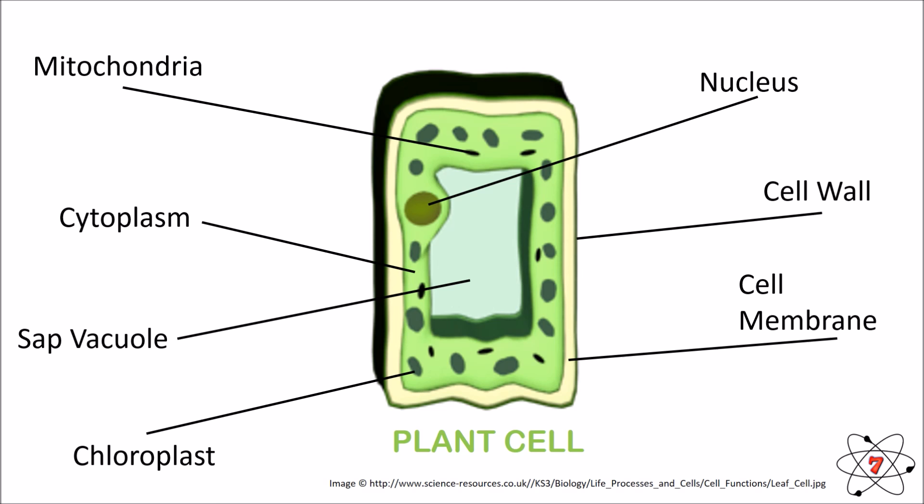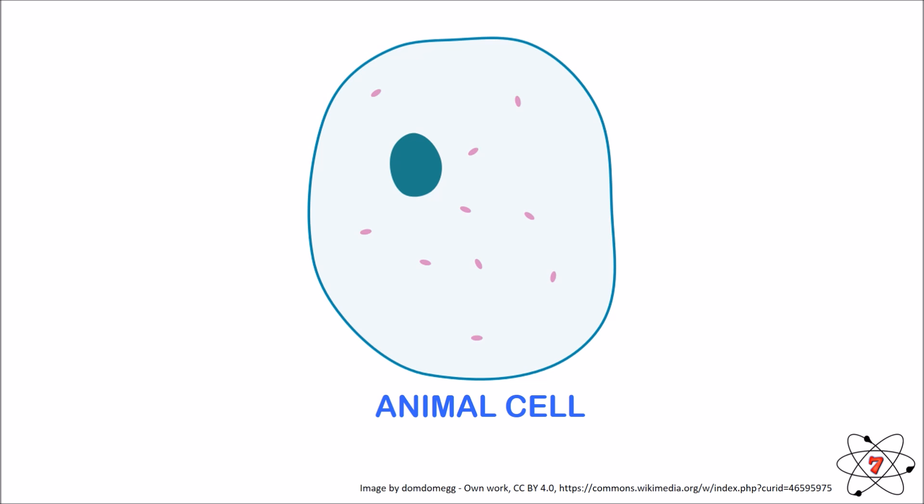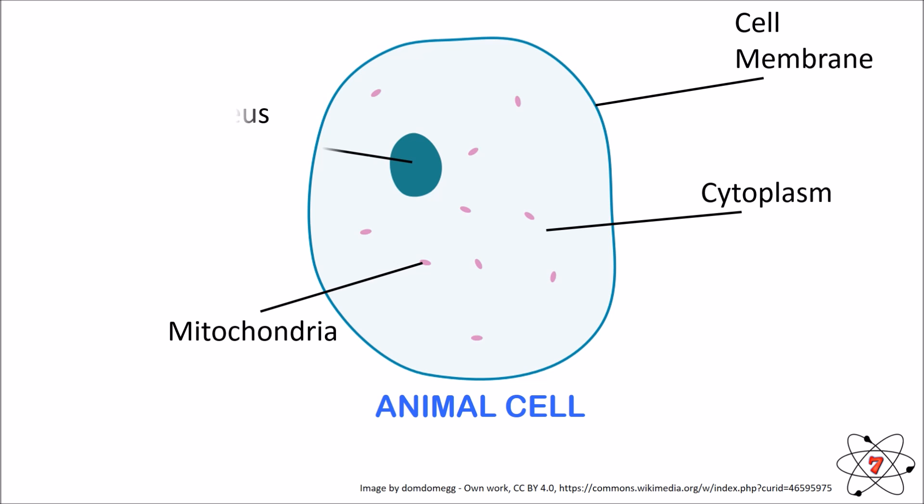And here we've got an animal cell. We need to know the different parts. We've got the cell membrane, the cytoplasm, the mitochondria and the nucleus. It's a bit bigger than a real cell would be — in fact, it's probably about 100,000 times bigger than a real cell would be. Just so you know, real cells don't quite look like this. These are oversimplified models. They make your lives a bit easier.